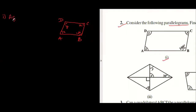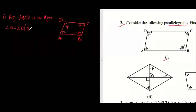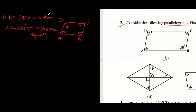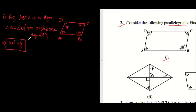We will start by writing: ABCD is a parallelogram. Now we can use the properties. Angle B equals angle D — opposite angles are equal in a parallelogram. Since we've written parallelogram at the top, we don't need to repeat it. Angle B is 100 degrees, so angle D is also 100 degrees. I'll write this and box my answer.